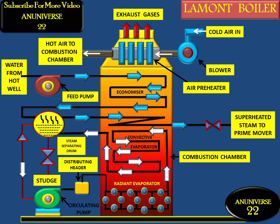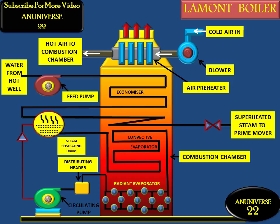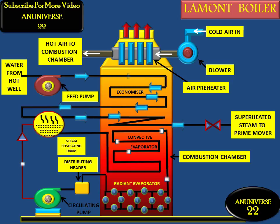From the evaporator tubes the flow goes towards the steam separating drum. These are the exhaust gases. Now we discuss the working of the LaMont boiler. It is a forced circulation and internally fired water tube boiler — the fuel is burned inside the boiler and water is circulated with the help of a centrifugal pump. The feed pump forces the water into the economizer, as shown by the blue arrows.